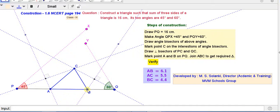So, these A and B points are obtained. And join AC and BC, also join AB. So, ABC is our required triangle.